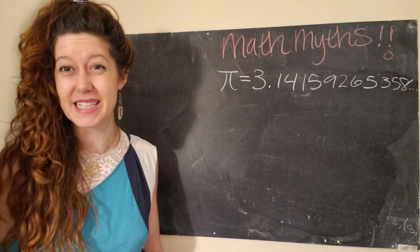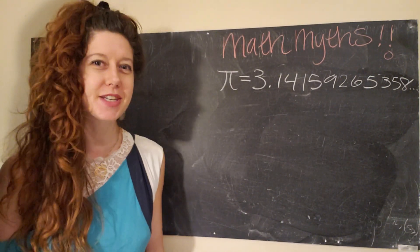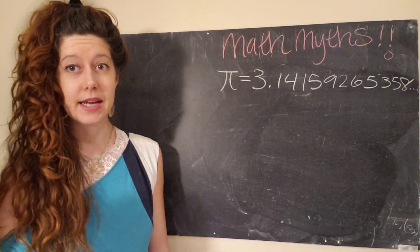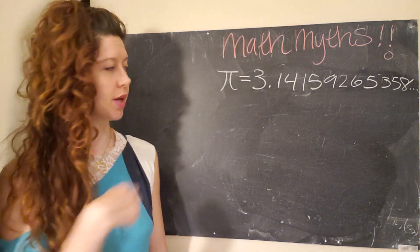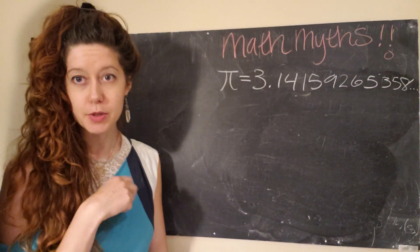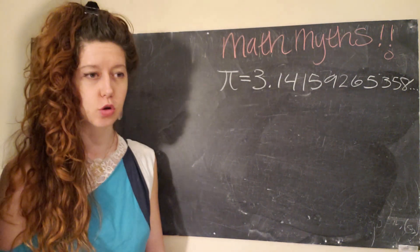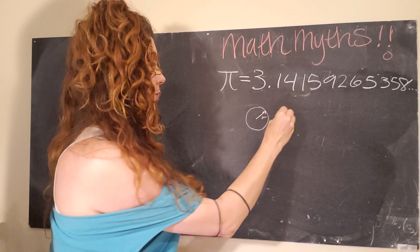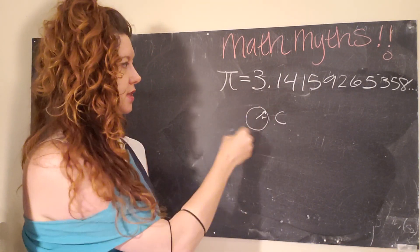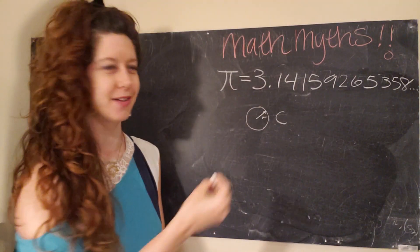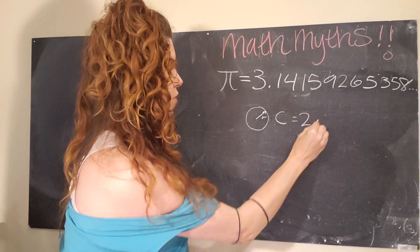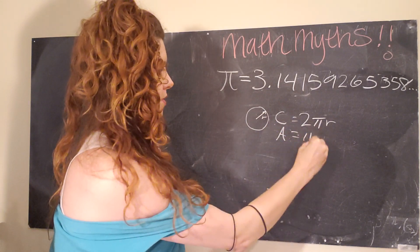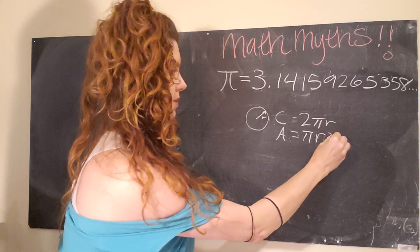So first of all, what is pi? Not the delicious kind of pi that you eat during Thanksgiving or whatever holidays you celebrate, but pi is a ratio that describes the relationship between the circumference and area of a circle to the radius of that circle. So if I have a tiny little circle with the radius r, the circumference equals 2 times pi times the radius of that circle, and the area equals pi times the radius squared.